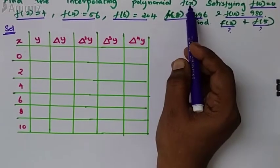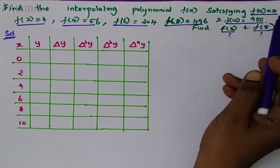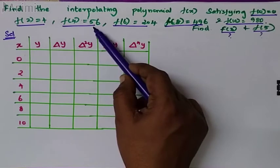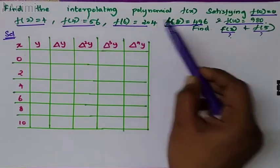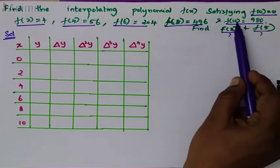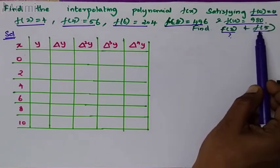Find the interpolating polynomial f of x satisfying f of 0 is equal to 0, f of 2 is equal to 4, f of 4 is equal to 56, f of 6 is equal to 204, f of 8 is equal to 496, f of 10 is equal to 980. Find f of 3 and f of 5.